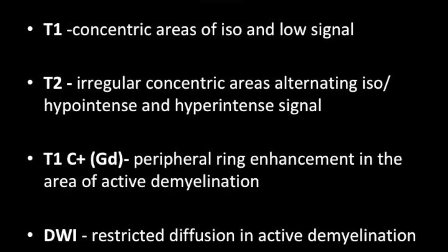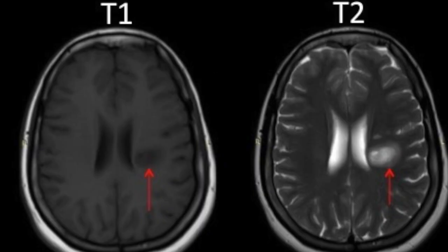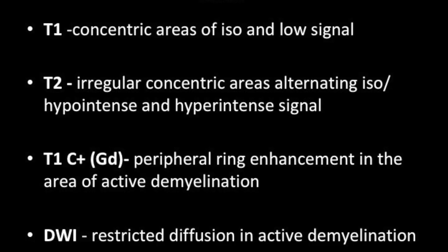On MRI, on T1-weighted images you get concentric areas of iso- and low signal. On T2-weighted images, these areas appear iso- to hypo- and hyper-intense. On post-contrast study, peripheral or ring enhancement is seen in the area of active demyelination. If there is active demyelination, you could also get restricted diffusion predominantly in the outer ring.